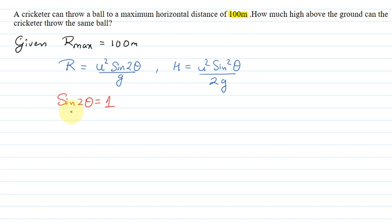Okay, that means here we have theta. So sin 2 theta is equal to 1. After comparing, we will get theta equal to pi by 4, that means 45 degrees. Now we have the theta value.